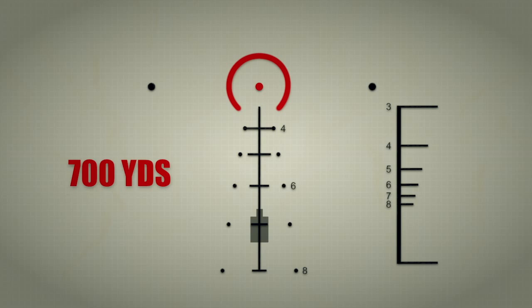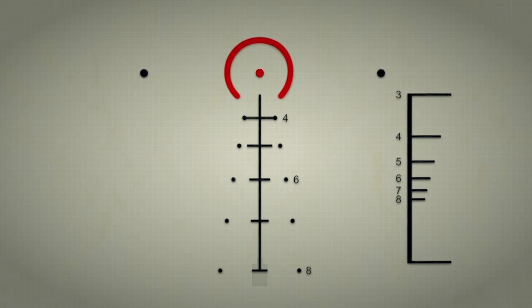For 700 yards range and aim with the fourth crosshair. For 800 yards range and aim with the fifth crosshair with the number eight next to it.